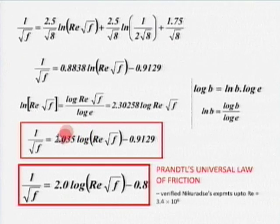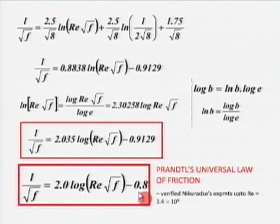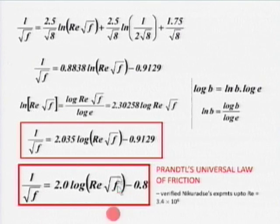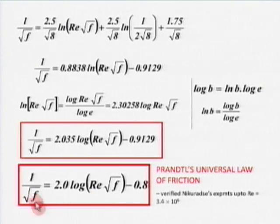Prandtl showed that the Blasius correlation does not work at higher Reynolds numbers. He tweaked 2.035 and 0.913 to 2 and 0.8, and found the equation fits Nikuradze's entire dataset. This proves that the universal velocity profile is indeed universal — it can derive an engineering parameter like friction factor from fundamentals. Friction factor is a function of Reynolds number alone.